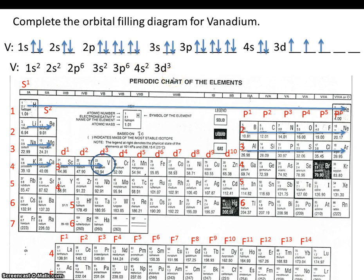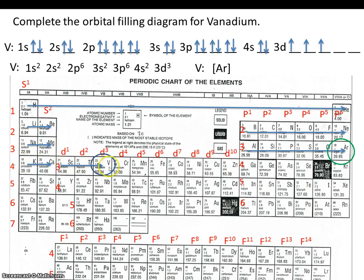You probably guessed that we can do a shorthand electron configuration as well. We follow the same rules — go back to the preceding noble gas, which in this case is argon. So starting with argon, we have 4s2 and 3d3.